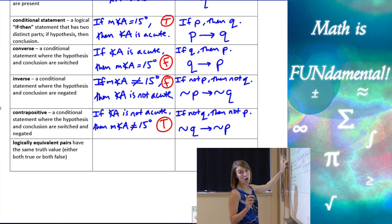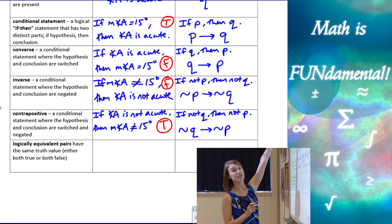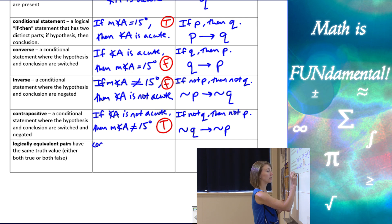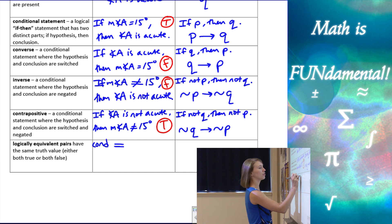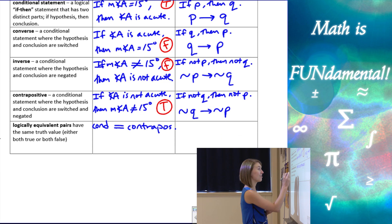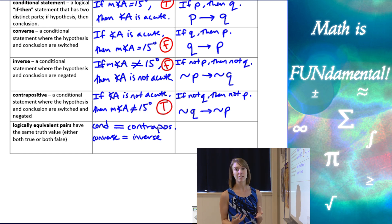This always works out this way. Our logically equivalent pairs are: the conditional and the contrapositive are always logically equivalent. And the converse and the inverse are always logically equivalent. They're not the same statements, but they always share the same truth value — if one is true, the other is true; if one is false, the other is false.